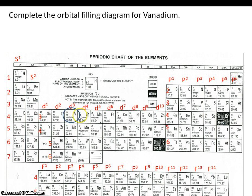We start with vanadium — it's number 23 — so we keep track of all 23 of vanadium's electrons. We have to work our way through the S block, the P block, and the D block, all the way up to number 23, vanadium. We have to stop at each block.